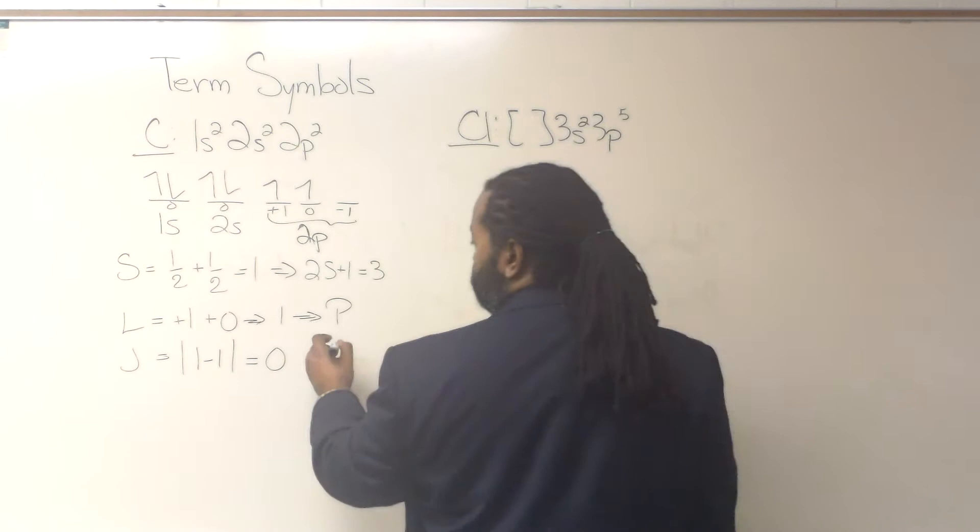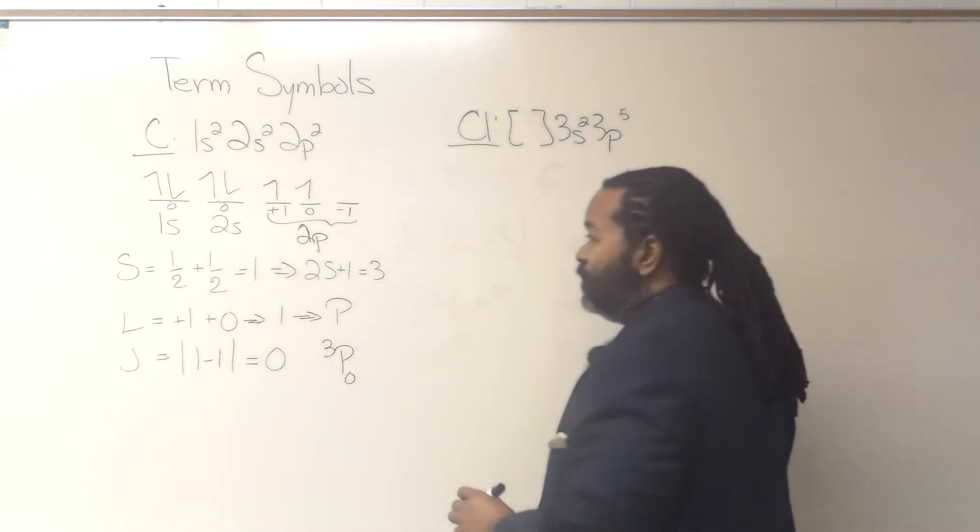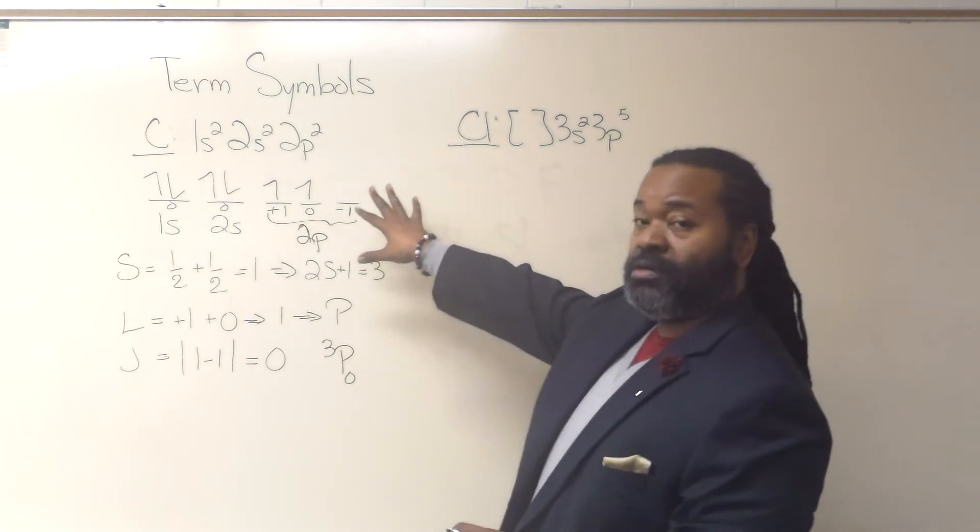So if we put all of that together, then what we have is a triplet p0 for the ground state for carbon.